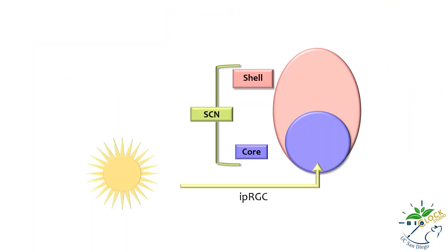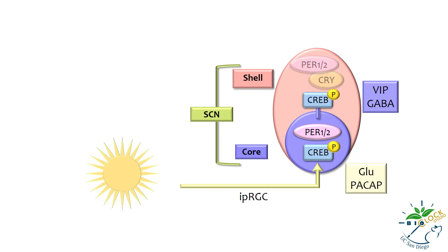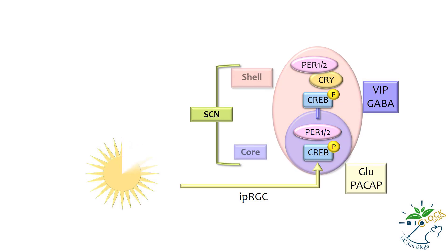In summary, when light stimulates the IPRGCs, glutamate and PACAP initiate a calcium CREB signaling cascade that activates expression of PER1 and PER2 in the SCN core neurons. Subsequently, the SCN core neurons release VIP and GABA onto the SCN shell neurons and initiate a CREB signaling cascade, activating PER and CRY expression. This process couples the oscillations in SCN core and shell neurons and allows the SCN to synchronize to the light-dark cycle.